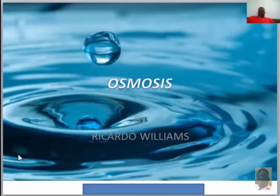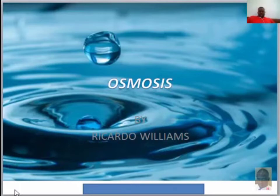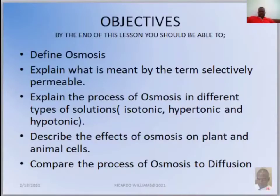Hello guys, welcome to another presentation by yours truly, Ricardo Williams. Today we'll be doing osmosis. We're going to define what osmosis is, explain what is meant by the term selectively permeable, explain the process of osmosis in different types of solutions — isotonic, hypotonic, and hypertonic — and describe the effects of osmosis on plant and animal cells.